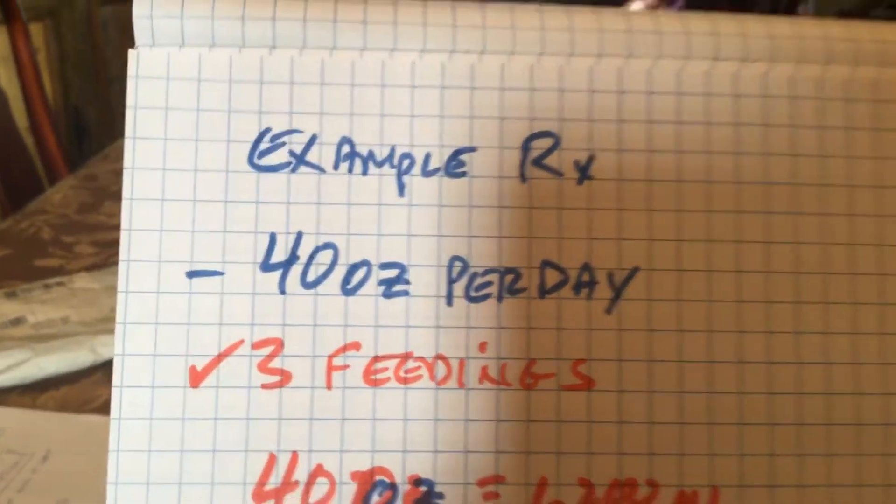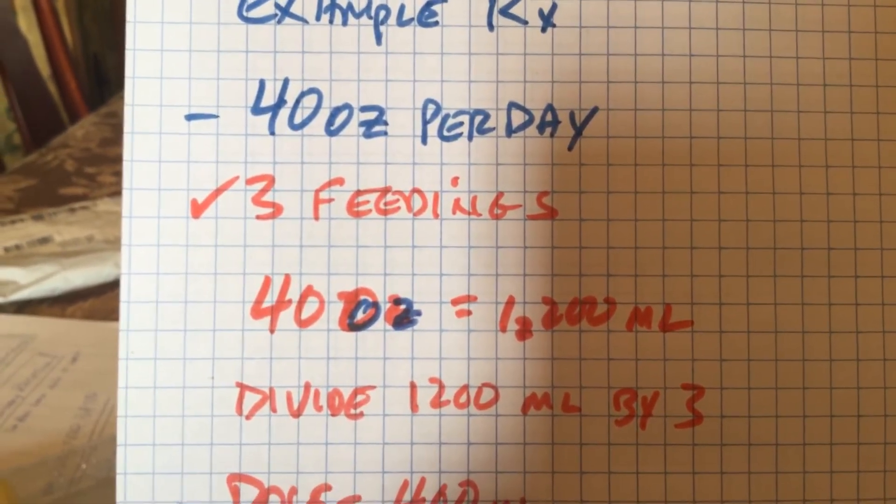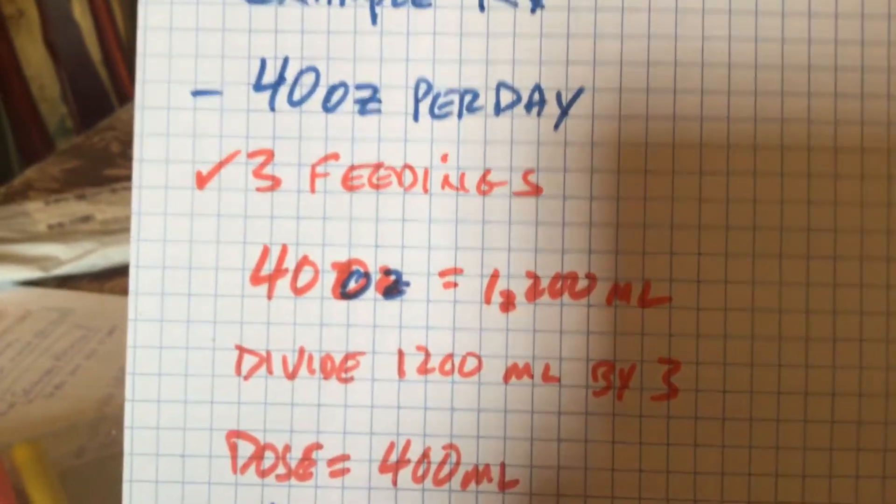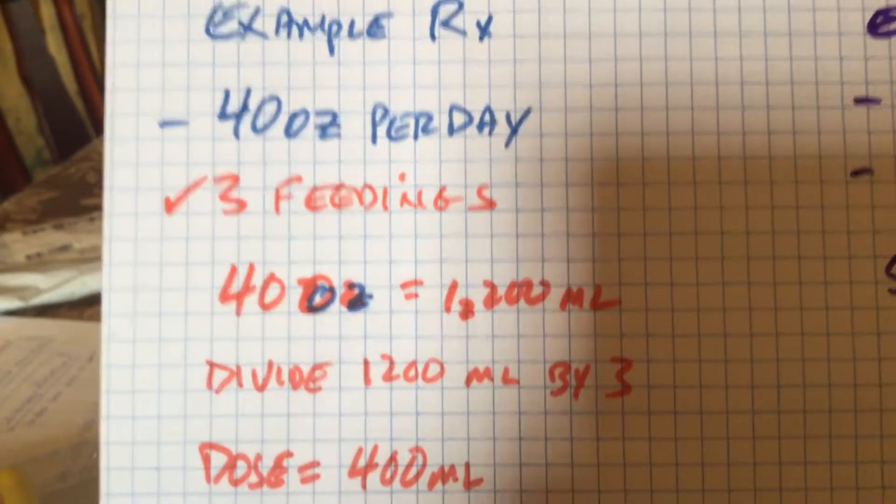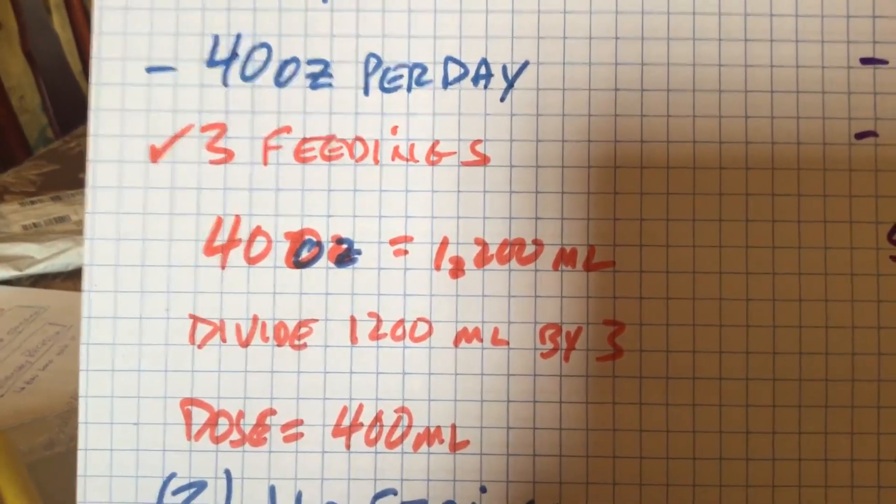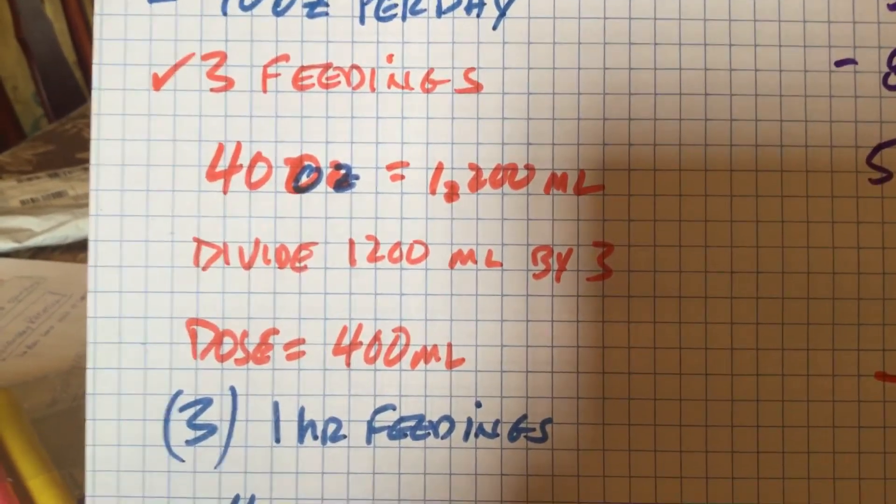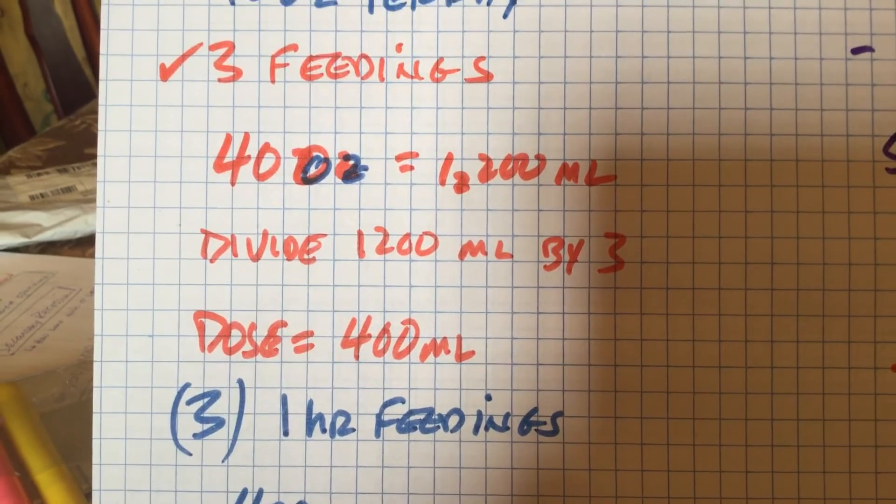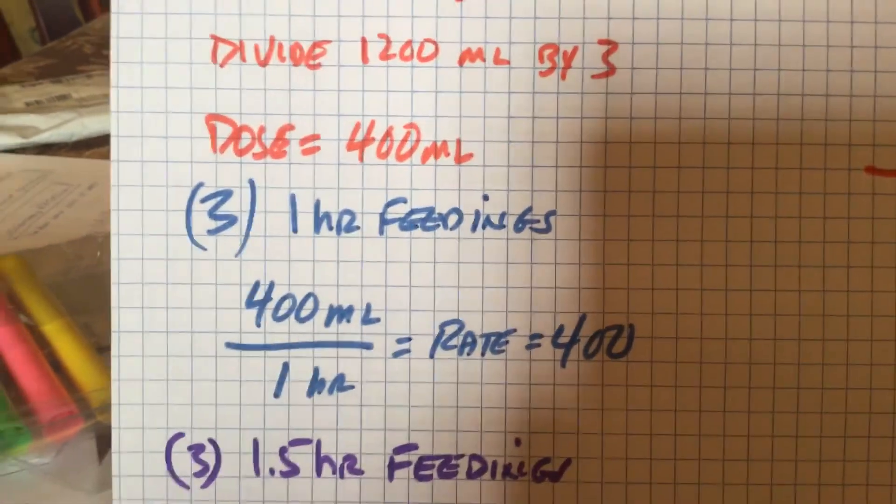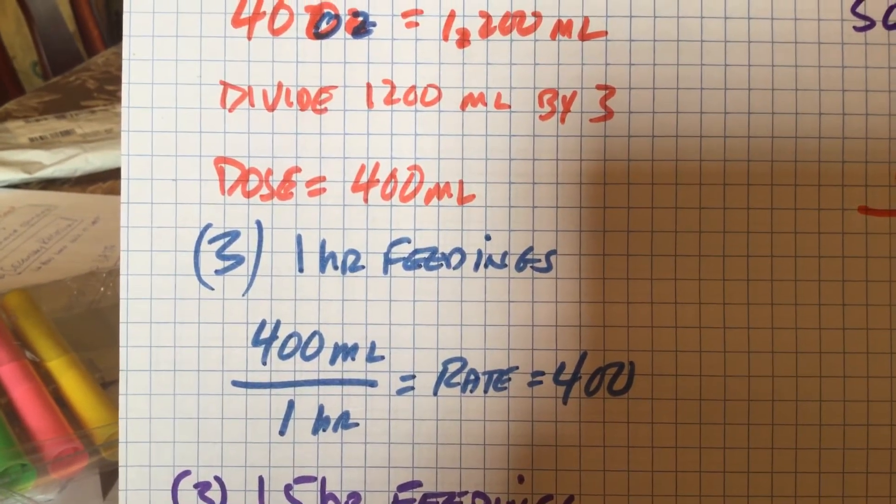The doctor writes a sample prescription, 40 ounces per day. And you want to do it in three feedings. So 40 ounces is 1,200 milliliters. So we divide that by three for three feedings. So our dosage is 400 milliliters. If we're going to give three one-hour feedings, that makes it very easy. Because now we're dividing by one. 400 divided by one equals a rate of 400.